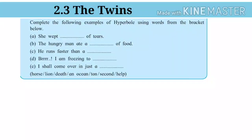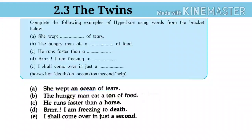Friends, now complete the following examples of hyperbole using words from the bracket below. The words are: horse, lion, death, an ocean, ton, second, help. Answers: 'She wept an ocean of tears.' 'The hungry man ate a ton of food.' 'He runs faster than a horse.' 'I am freezing to death.' 'I shall come over in just a second.' These are some examples of hyperbole.